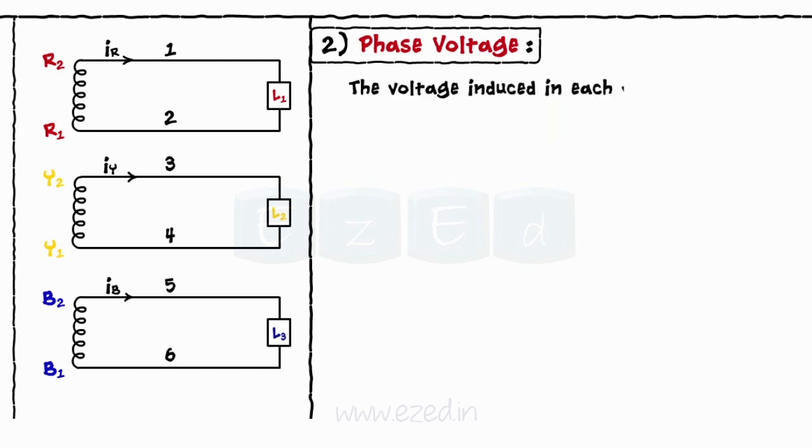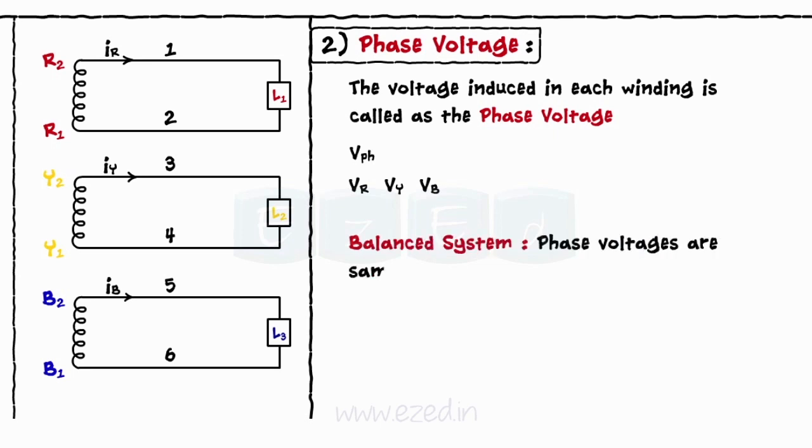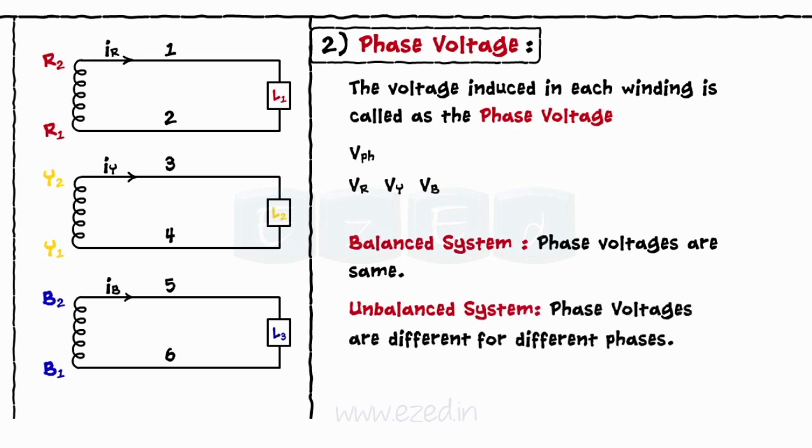The voltage induced in each winding is called as the phase voltage, represented as VPH. Thus we have phase voltages as VR, VY, and VB. For balanced systems, all phases have equal phase voltage. For unbalanced systems, the phase voltages are different for each phase.